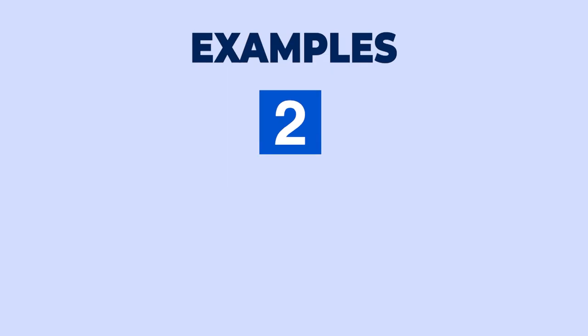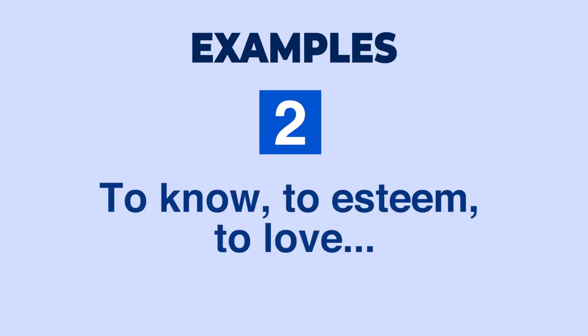Example two: 'To know, to esteem, to love.' These are the sequential three steps used in falling in love. You know a person, you start respecting him or her, and then you fall in love. So knowing is at the lower base and loving is at the higher base — another clear example of climax.